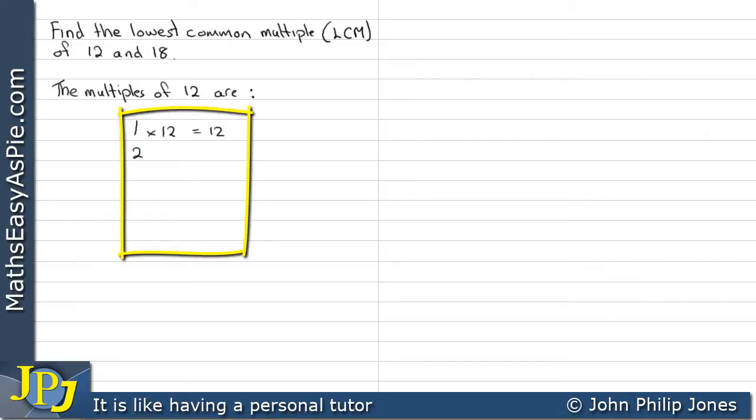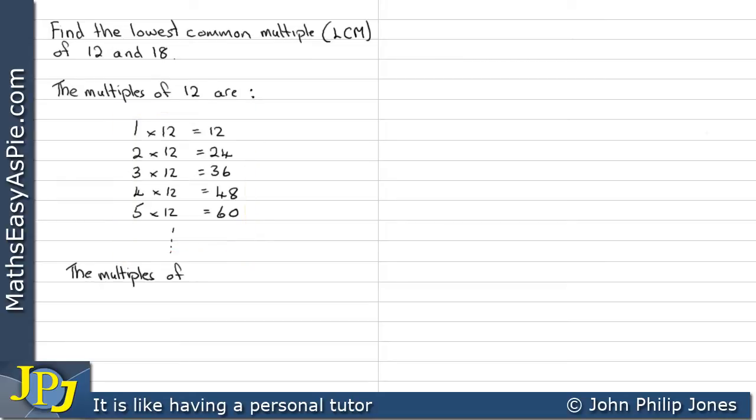The multiples of 12 are 1 times 12 is 12, 2 times 12, and so on. In other words, we write out the times table here, which I could carry on with.